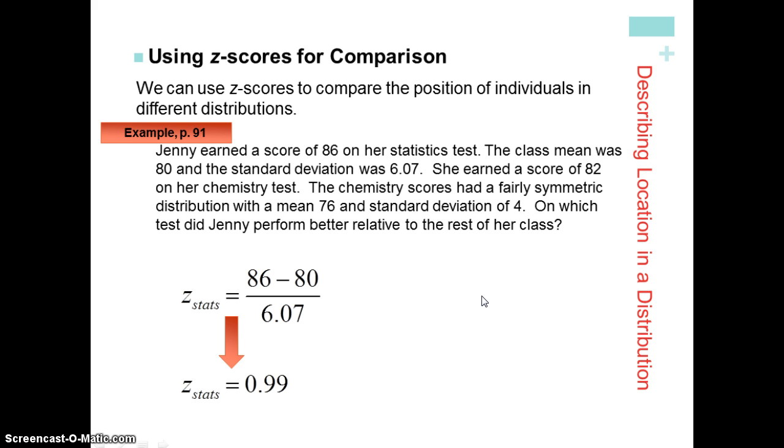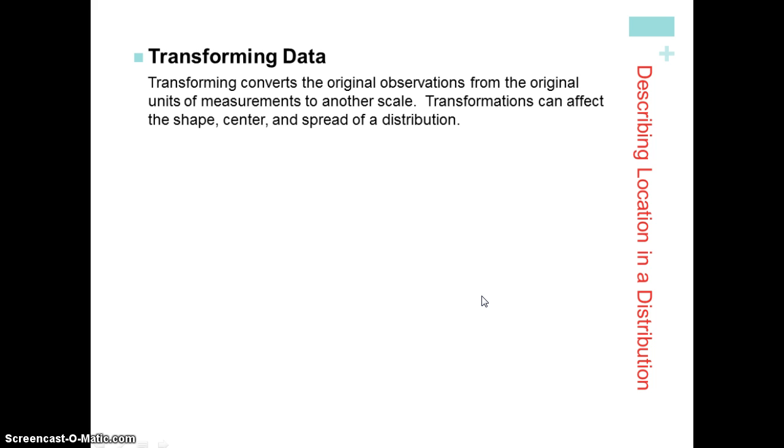On page 91 of your book, there's another example using Jenny. And this time she still has an 86 on her statistics test. But this time she found out that she has a score of 82 on her chemistry test. The chemistry test scores also had a fairly symmetric distribution. This time the mean was 76 and there was a standard deviation of 4. That's 4 points. The standard deviation is going to be in the same units as the mean. On which test did she perform better relative to the rest of her class? So we already did the example of her statistics test. In the chemistry test, we can see that she's 1.5 above the mean. That means relative to her peers, Jenny did much better on her chemistry test than she did on her statistics test.